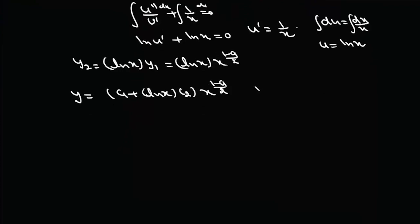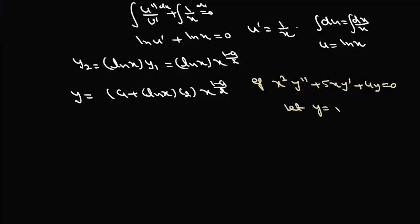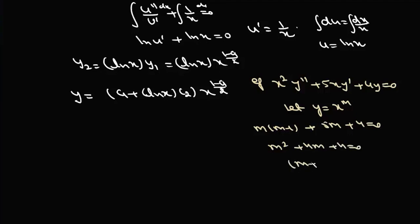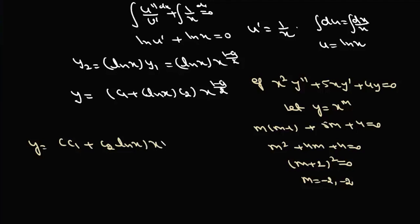For an example in Case 2, consider x²y'' + 5xy' + 4y = 0, which is Euler-Cauchy form. Letting y = x^m gives m(m−1) + 5m + 4 = 0, or m² + 4m + 4 = 0, i.e., (m+2)² = 0. The two equal real roots are m = −2 and m = −2. We write the solution as y = (c₁ + c₂ log x)x^(−2).